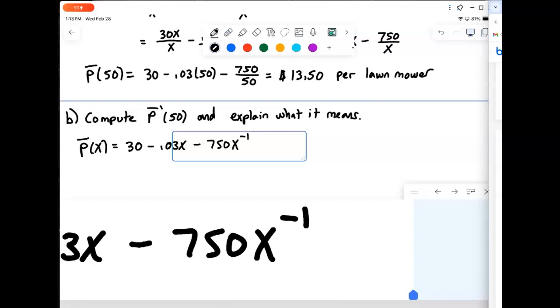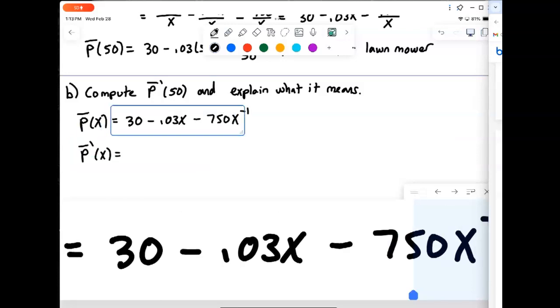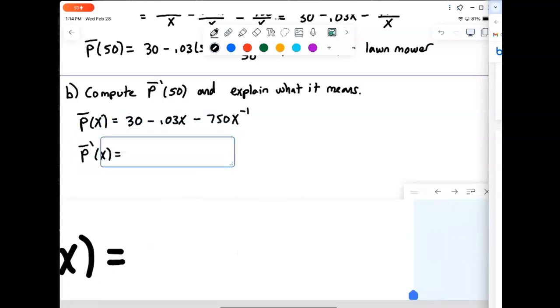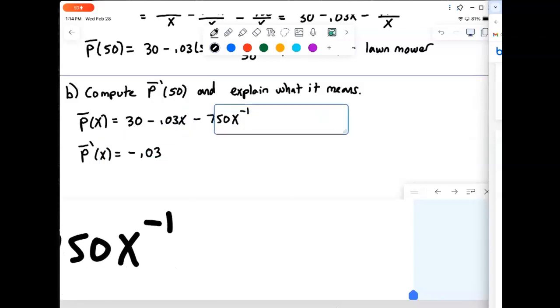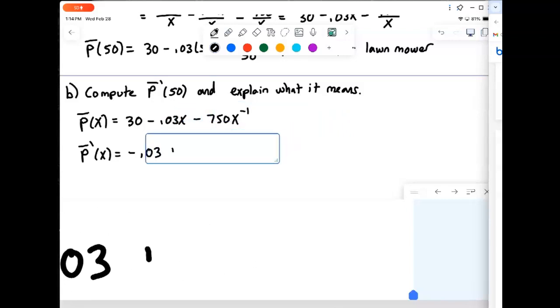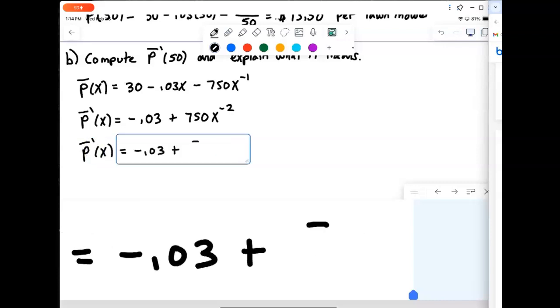So now we're in the right format so we can go ahead and compute our derivative. So P bar prime of x: derivative of 30 would just be zero, derivative of minus 0.03x would be minus 0.03, and then derivative of 750x to the minus 1, we would multiply by the minus 1, make that plus 750, drop the exponent by 1. So that our P bar prime is now negative 0.03 plus 750 over x squared.